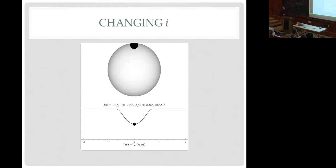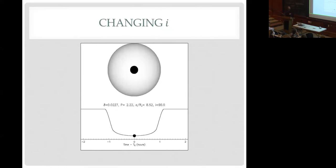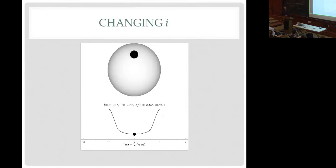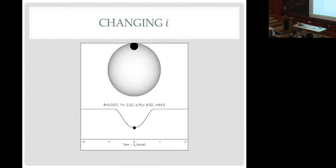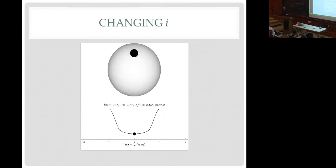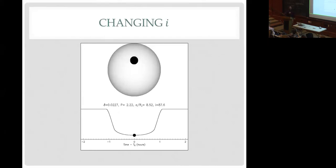Now I'm taking a snapshot right in the middle of the transit and varying a few different parameters. First I'm varying R_P/R_star — making the planet bigger — and not surprisingly the transit depth gets deeper. Then I'm changing the inclination of the orbit while everything else is fixed. This is HD 189733. If I change the inclination from a grazing geometry to a central crossing geometry, at central crossing it gets very flat, and at grazing you see a V-shaped transit. That's what we're actually measuring when we measure the inclination of the transit.